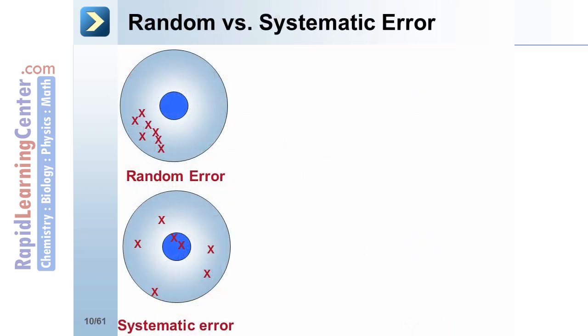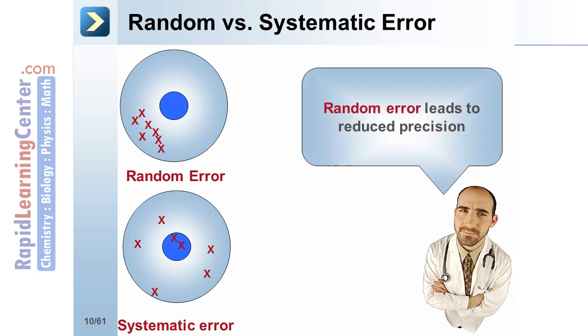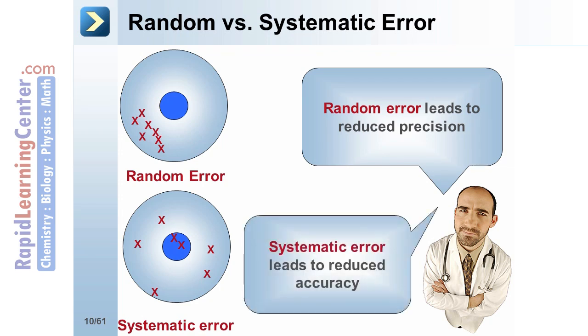While accuracy in a test refers to the trueness or validity of the measurement. When discussing error in a test, random error leads to reduced precision while systematic error leads to reduced accuracy.